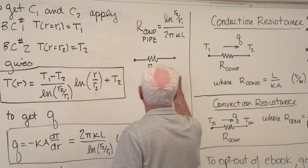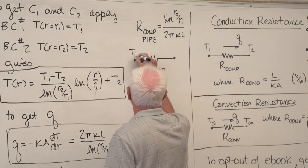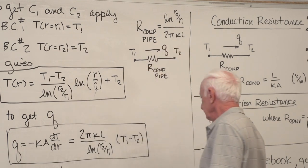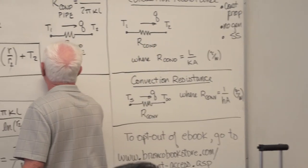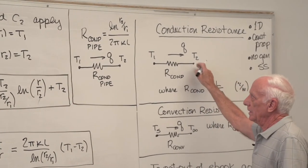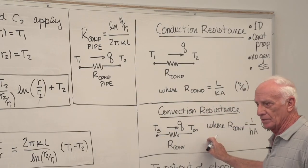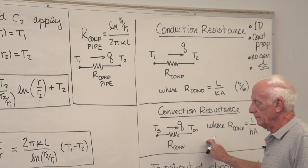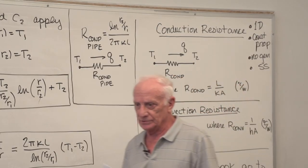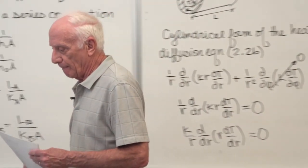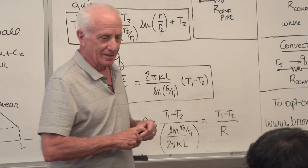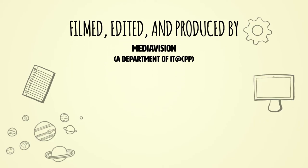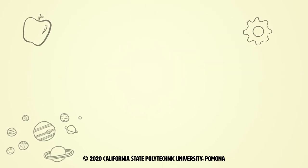We now have three resistances to work with: conduction through a plane wall (L/KA), conduction through a pipe wall (ln(r2/r1) / 2πKL), and convection (1/HA). We'll work an example with pipe walls next class. Homework is due today on the front desk.